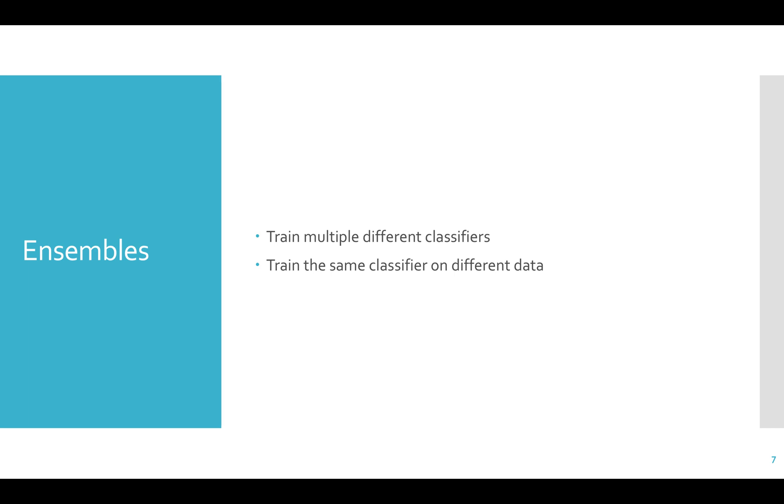There are two ways you can get different classifiers to build an ensemble with. We can build an ensemble by training different classifiers, or we can train a single type of classifier on different datasets. Either way you do it, you'll have many classifiers.